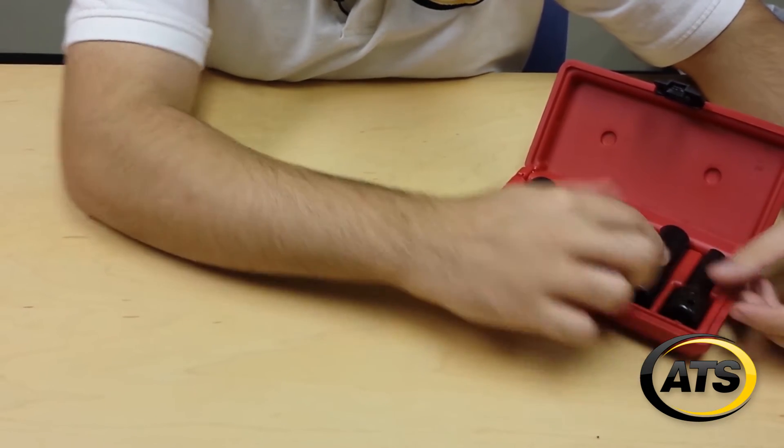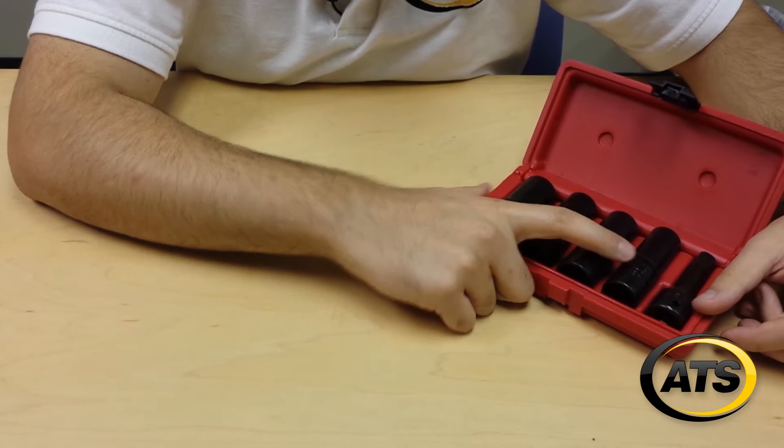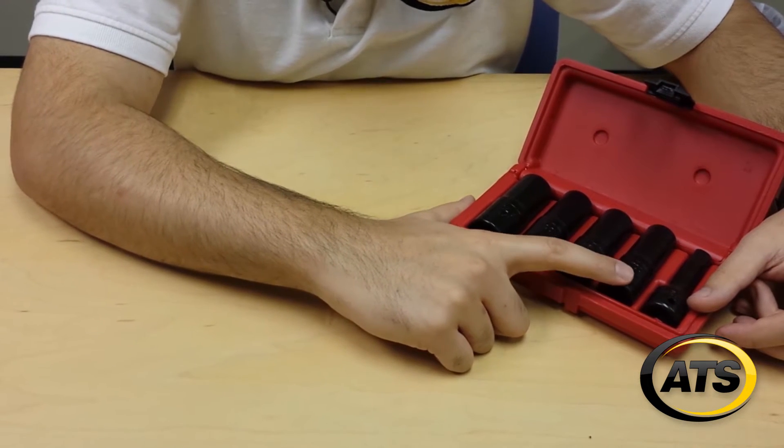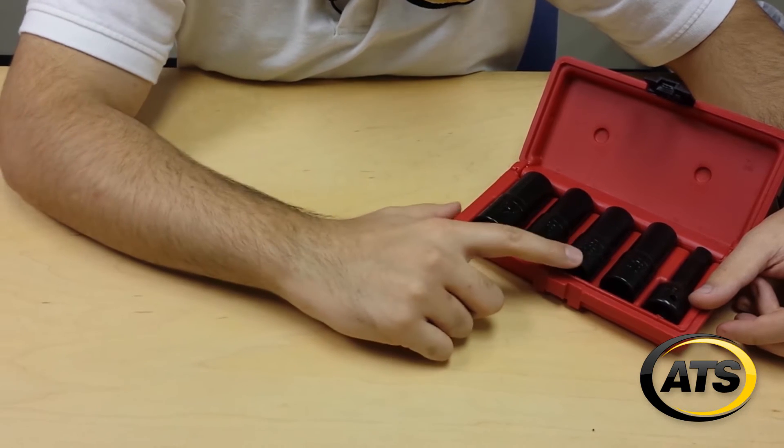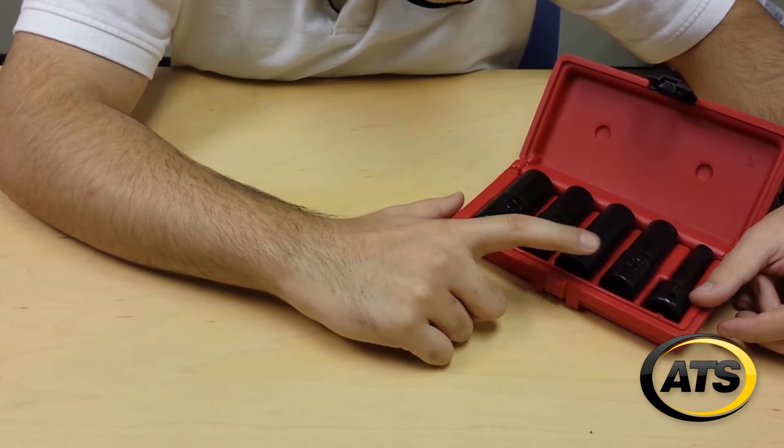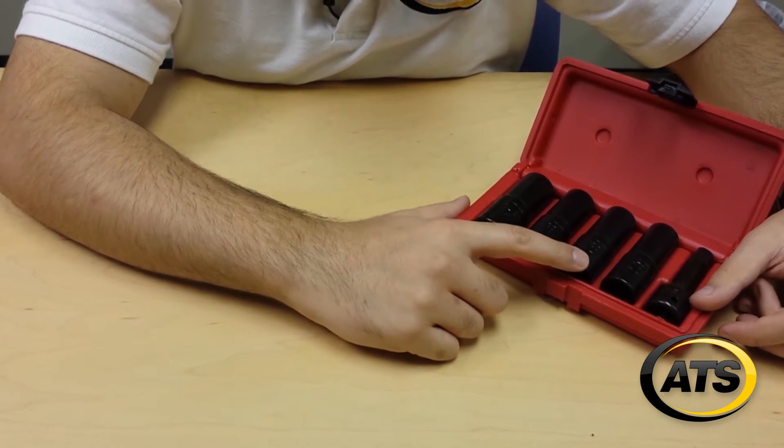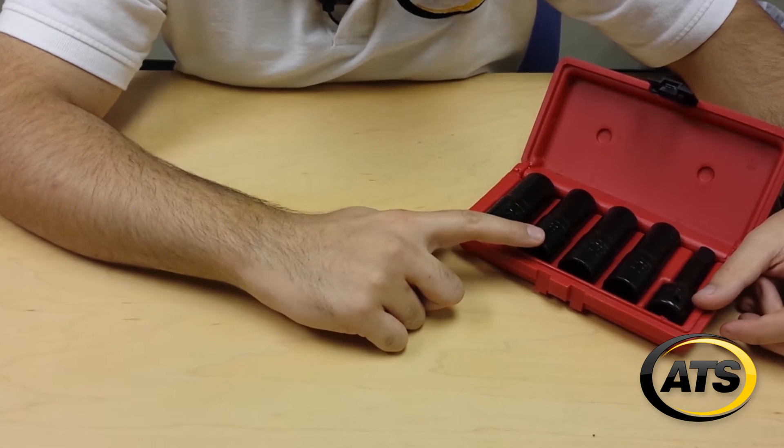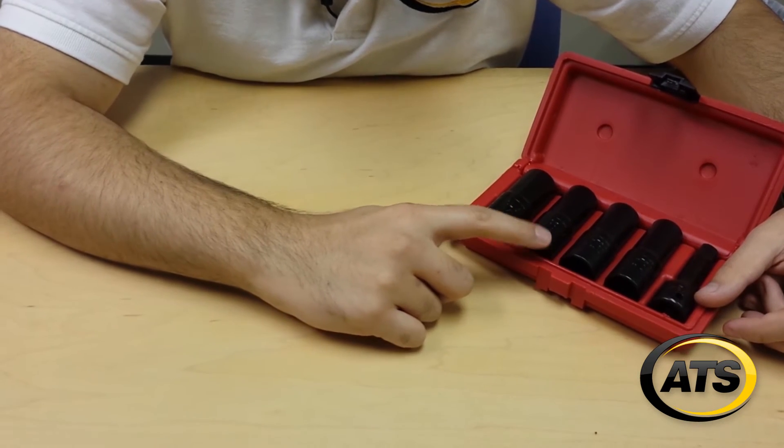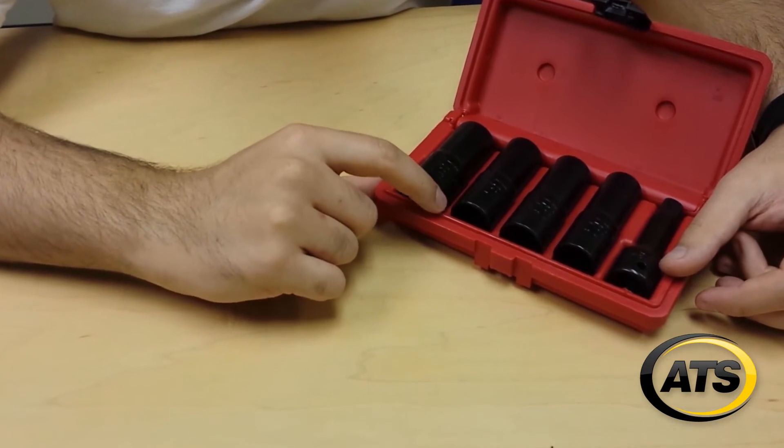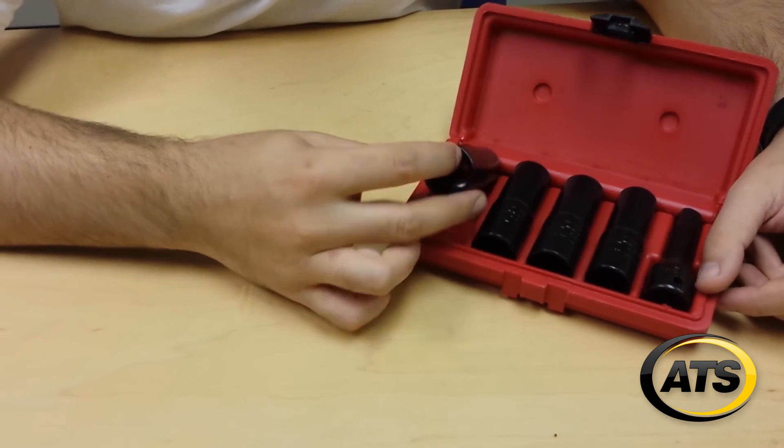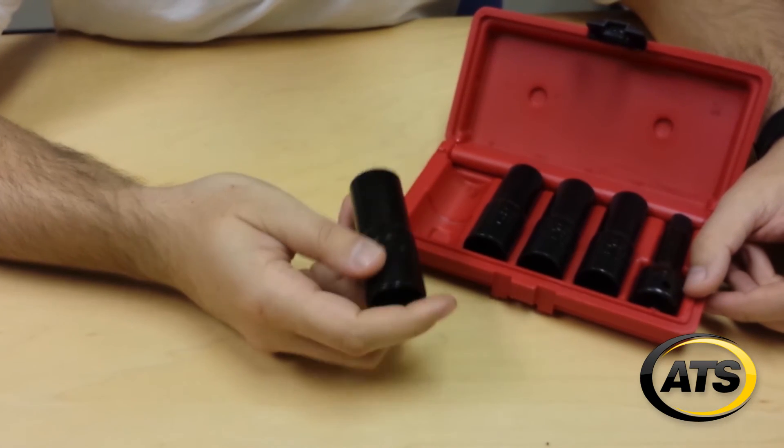So it has a 17-19mm flip socket which is kind of uncommon to do a lot of European vehicles. It has a 19-21 for some larger European cars and some SUVs or imports in general. A 3 1/4-13-16 and a 7 1/8-15-16 for larger trucks and stuff like that.